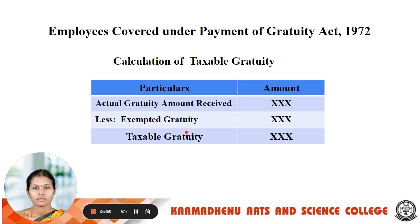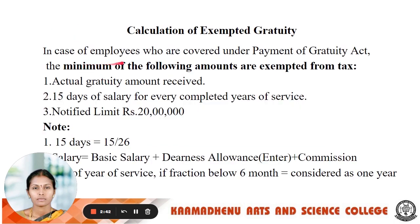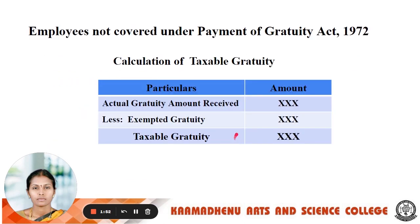The exemption limit for employees covered under the Payment of Gratuity Act is the minimum of the following amounts — whichever is less. First, the actual Gratuity amount received. Second, 15 days salary for every year of completed services. Third, the notified limit of rupees 20 lakh (maximum). Here, 15 days salary means 15 divided by 26. Salary refers to basic salary plus dearness allowance (DA) entered for service benefit, plus commission. For every year of completed services, if the employee's service is above 6 months it will be considered as 1 year; below 6 months will be ignored.